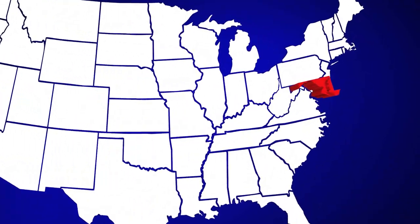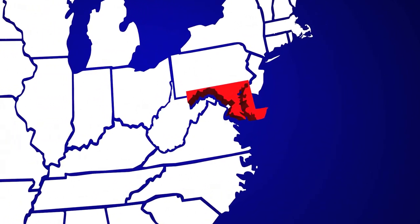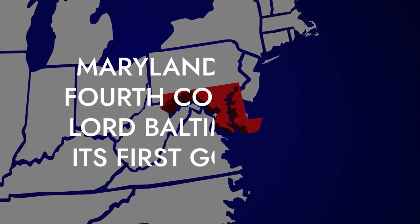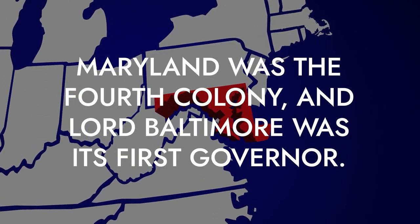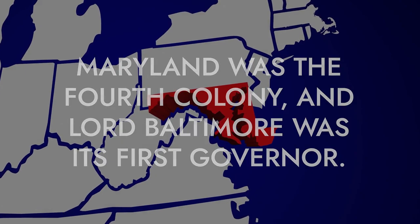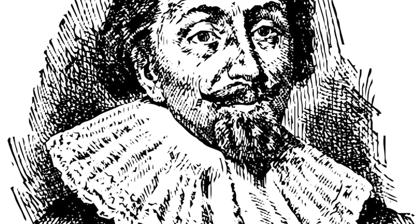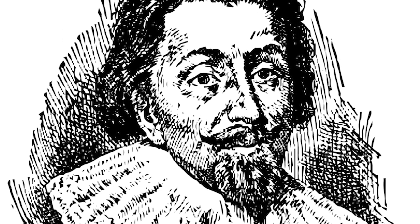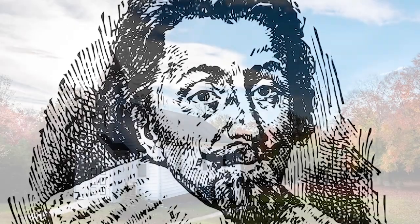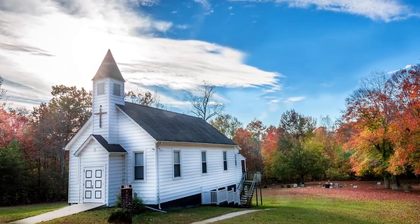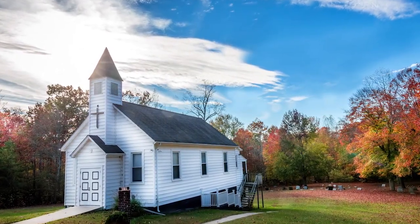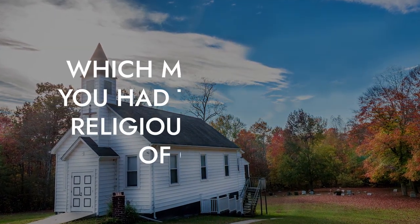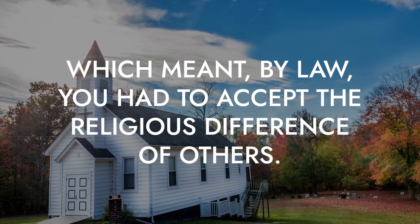In the year 1634, Roman Catholics founded the present-day state of Maryland. Maryland was the fourth colonial colony, and Lord Baltimore was its first governor. Lord Baltimore named the colony Maryland after the king's wife, Queen Henrietta Maria, or Mary. In 1649, Maryland passed the first American law for religious toleration, which meant by law you had to accept the religious differences of others.